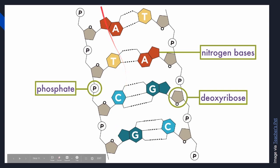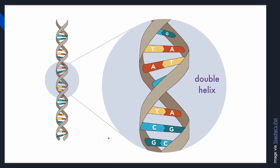Kung mapapansin ninyo, slanted ang ating structure. And that is what the scientists discovered. Na si adenine is for thymine, and cytosine is for guanine. That is why it forms a structural shape na double helix.